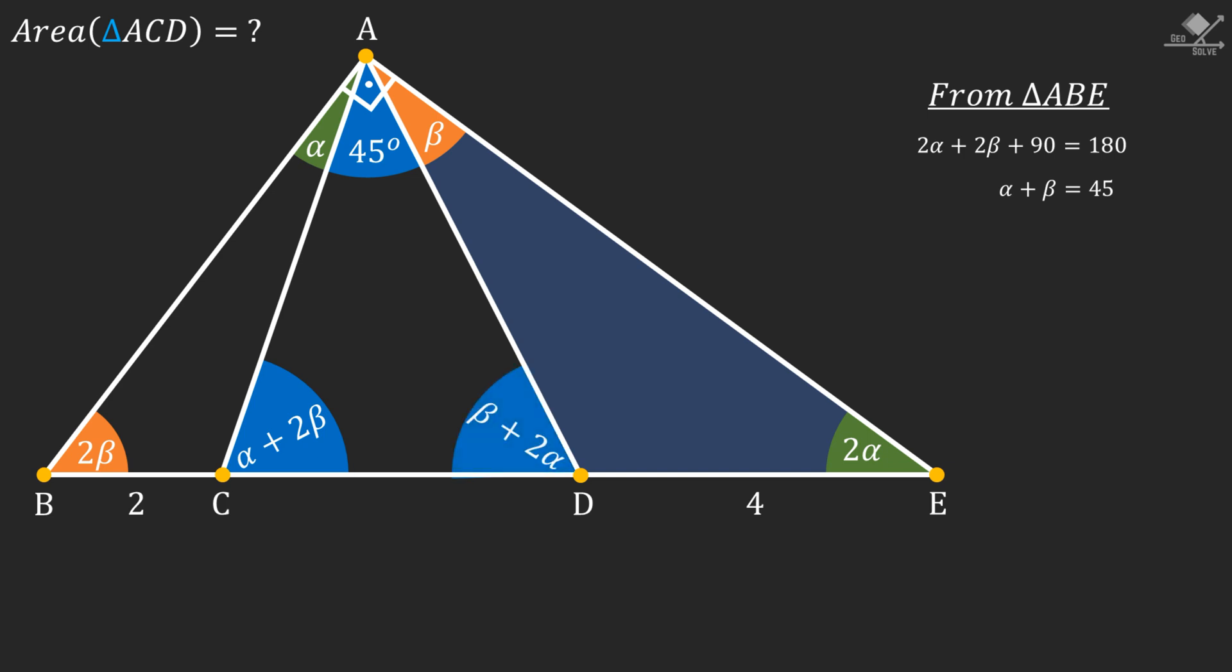Now let's focus on angle ACD which is α + 2β degrees. And write it in the form of α + β + β. And instead of α + β we can write 45 degrees. Let's also show that on the diagram.